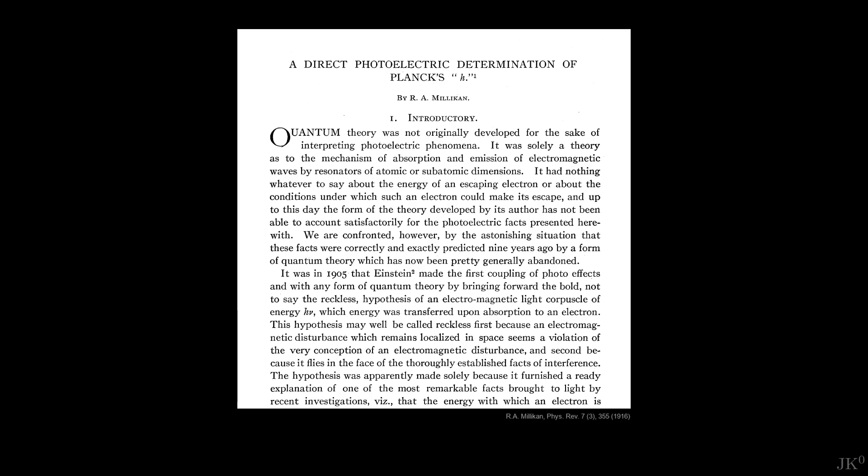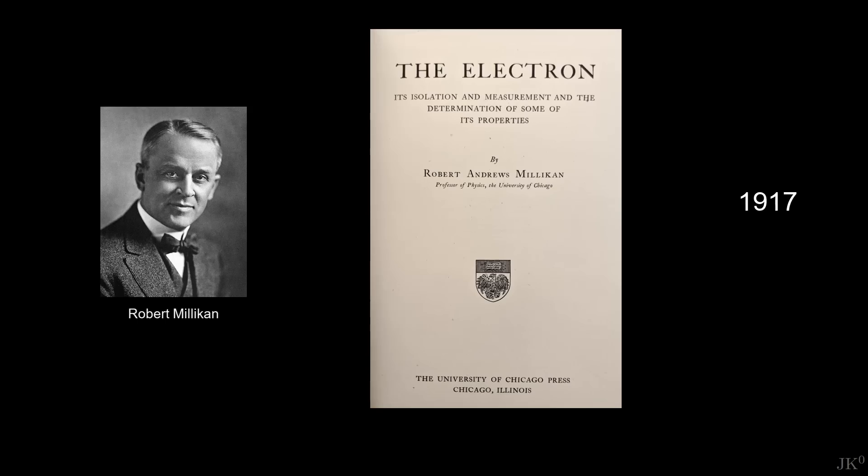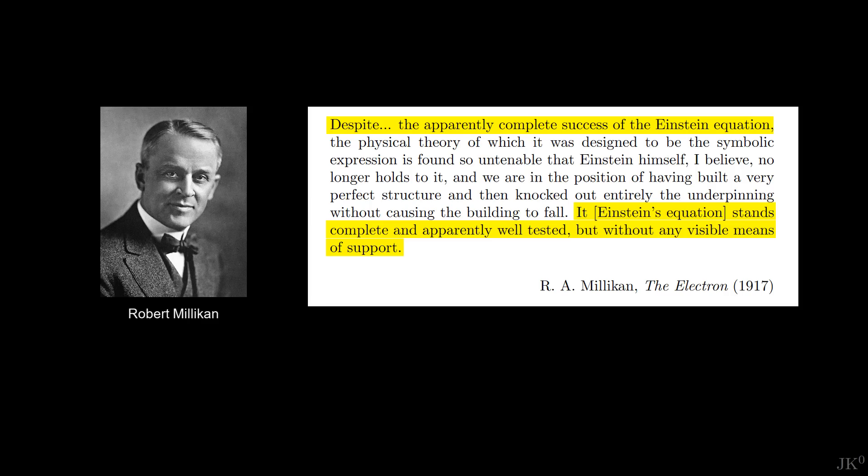In 1915, Millikan announced his preliminary results and published his final results in 1916. The following year, Millikan published a textbook titled The Electron, where he wrote, Despite the apparently complete success of the Einstein equation, it stands complete and apparently well tested, but without any visible means of support.